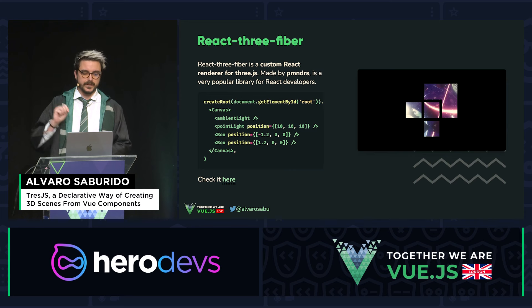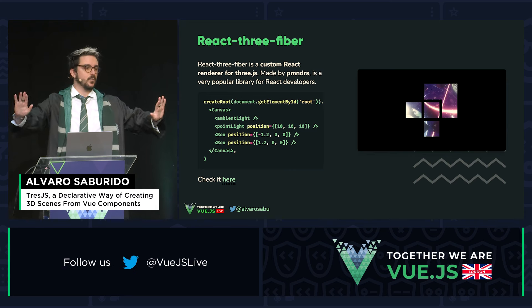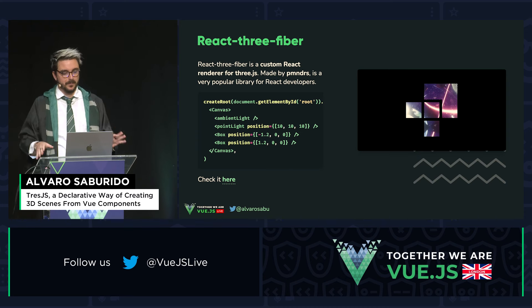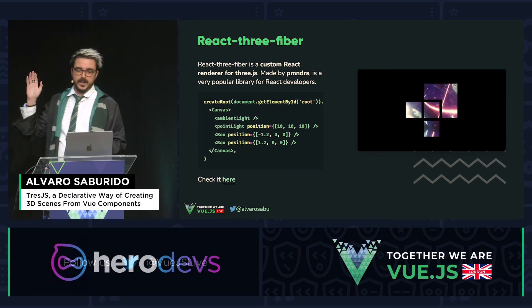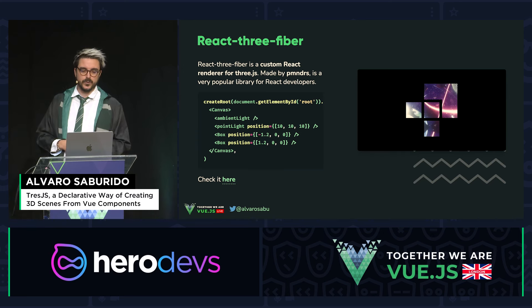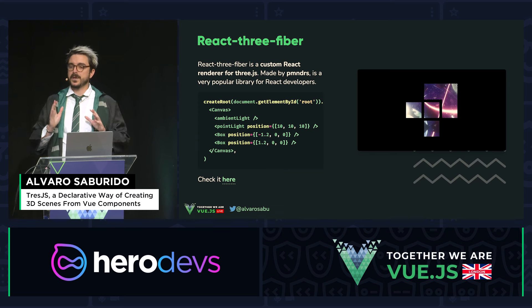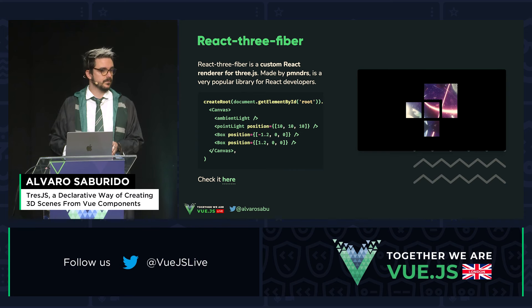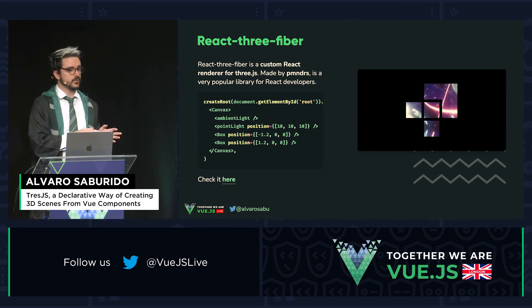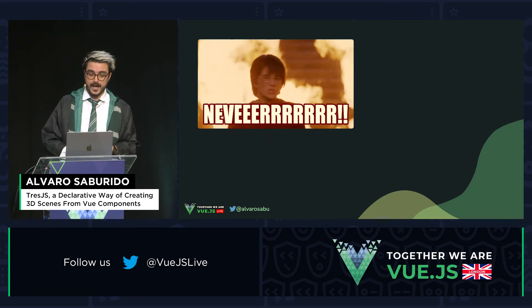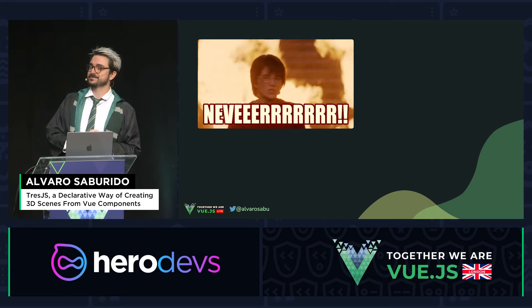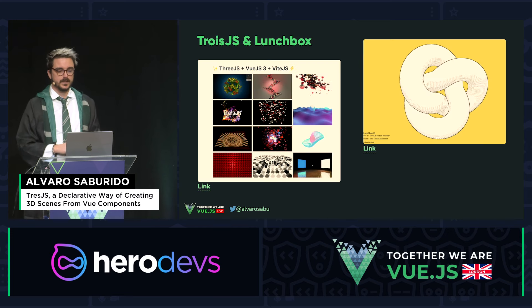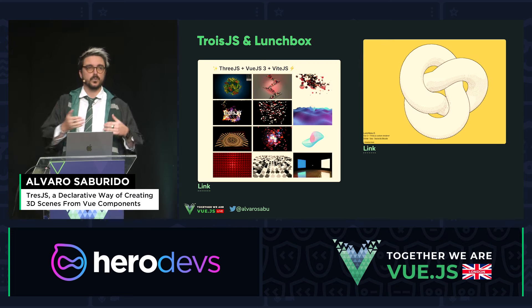Then I discovered React Three Fiber. Before you say 'why are you talking about React at a Vue conference' — I know. But React Three Fiber is an amazing library made by Poimandres, which is an amazing studio. They were basically able to create scenes with React components instead of using plain JavaScript. But there's a catch: I will never use React. I'm joking — I use React, but I prefer Vue.